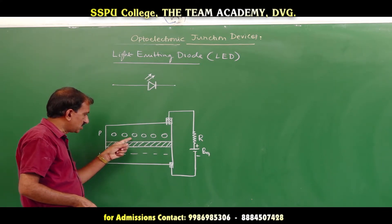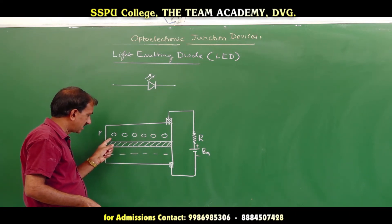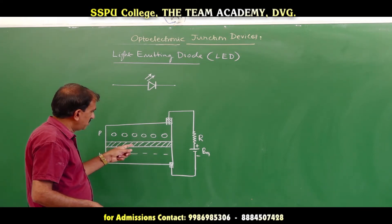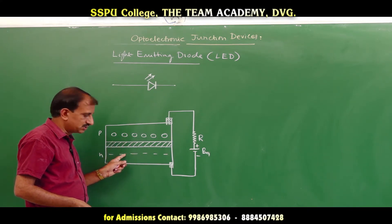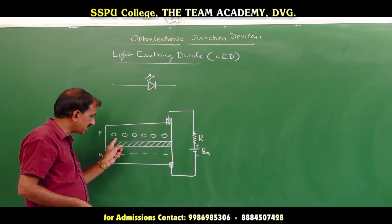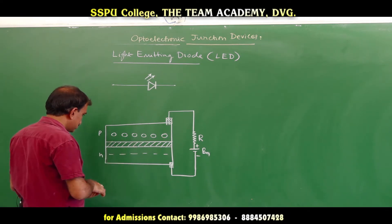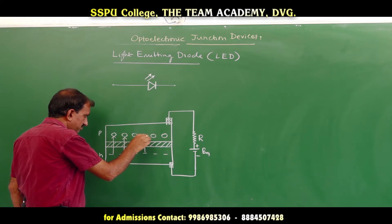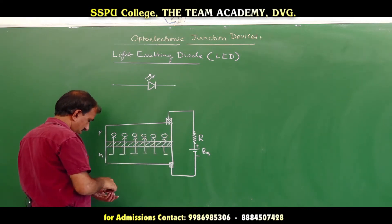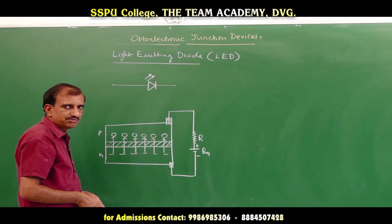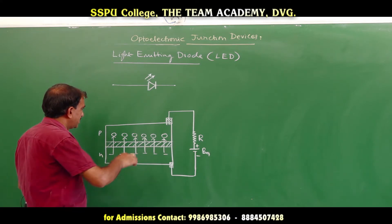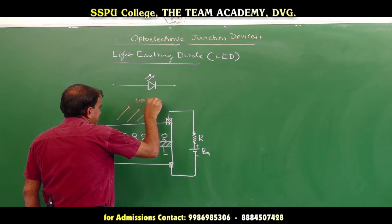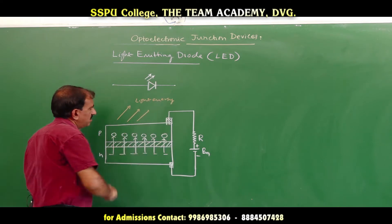In this region, the minority carrier concentration increases. Due to this increase in minority charge carriers, the electrons and holes recombine with each other. Due to the recombination of electrons with holes, energy is released in the form of light — this is the light energy emitted from the light emitting diode.